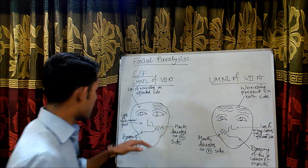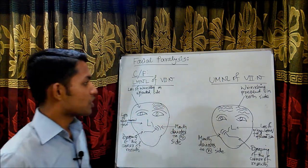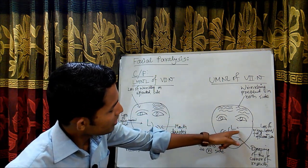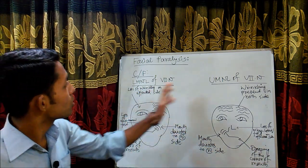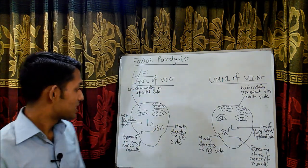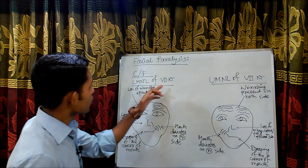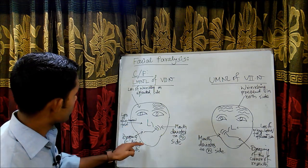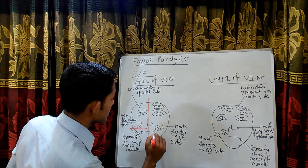As these muscles are paralyzed on the affected side, the muscles of the other side get the upper hand and pull the corner of the mouth — that's why the mouth deviates to the normal side and there is drooping of the corner of the mouth on the affected side. In lower motor neuron type of facial nerve paralysis, one whole side of the face is affected and the other side is intact.